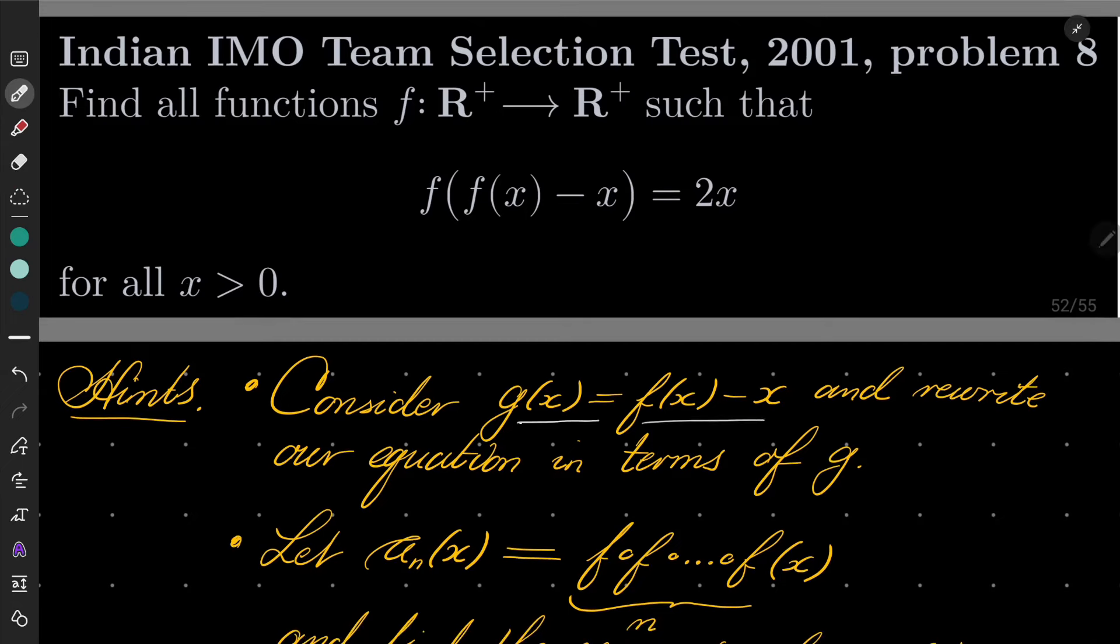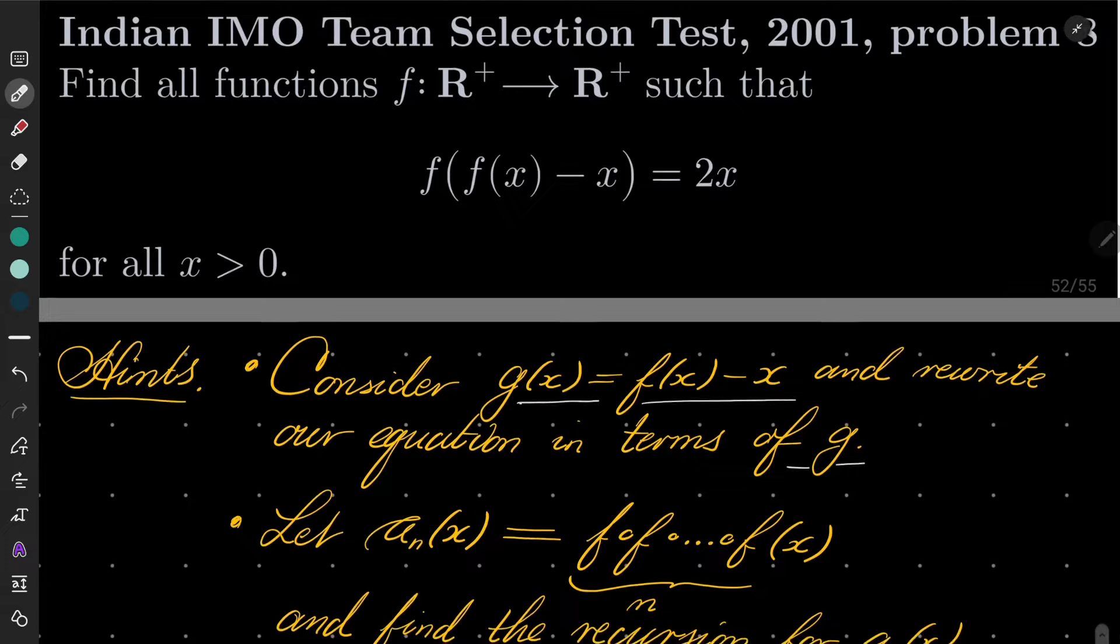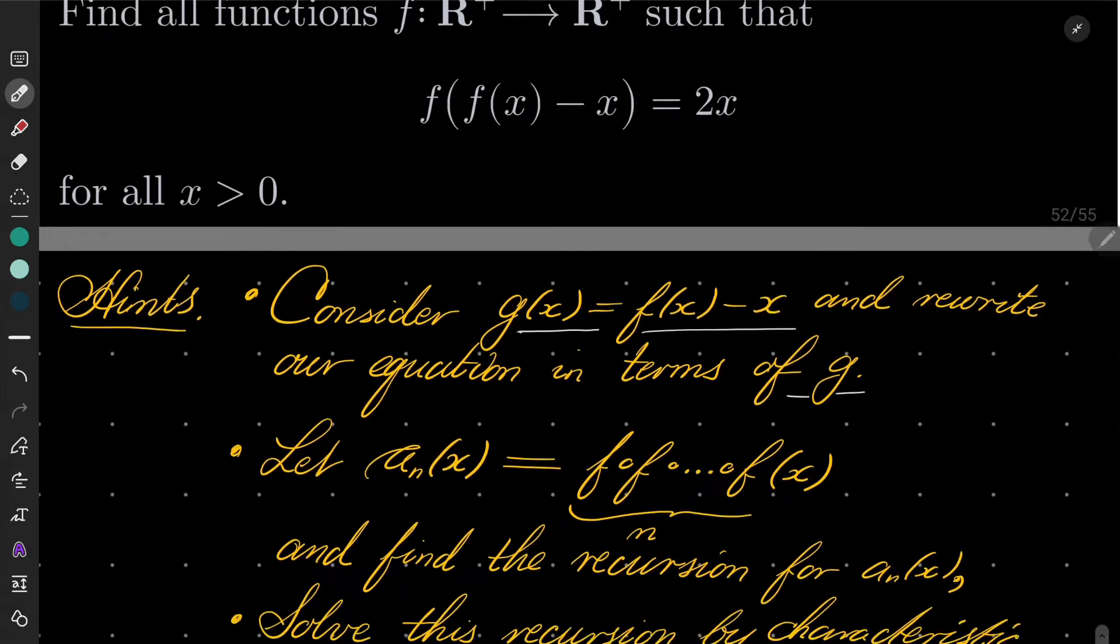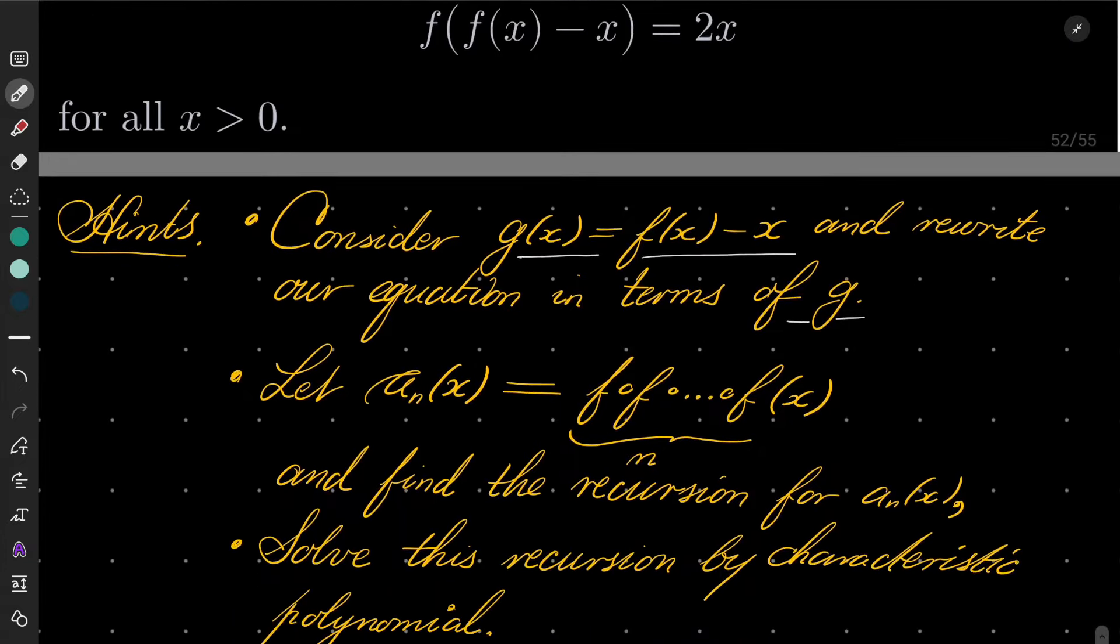Then let a_n(x) be the nth composition of our function f with itself. Find the recursion for this sequence and solve this recursion using characteristic polynomial.